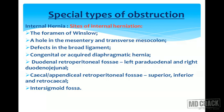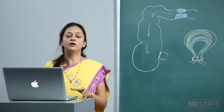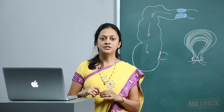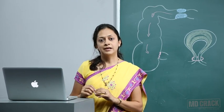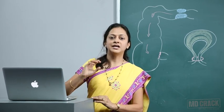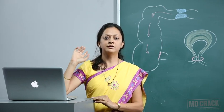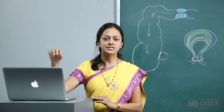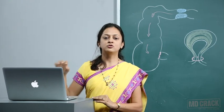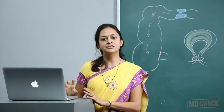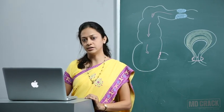Additional sites include congenital or acquired diaphragmatic hernia, duodenal retroperitoneal fossa, left paraduodenal and right duodenojejunal fossae. In the cecal or appendiceal retroperitoneal fossa, it can be superior, inferior or retrocecal, and inter-sigmoid fossa. A question may ask which site is not present in internal herniation — whichever is not mentioned is the answer.